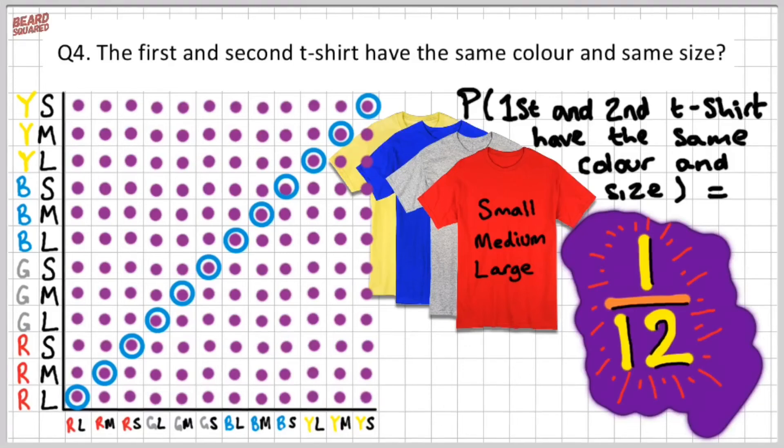Now for sure, there are different ways for you to do this. However, I'm showing the sample space so you can visually understand how this is done. I want you to understand what is the method of finding out the first and the second t-shirt having the same size and the same color. I hope I've made it nice and clear for you and you've understood the concept.